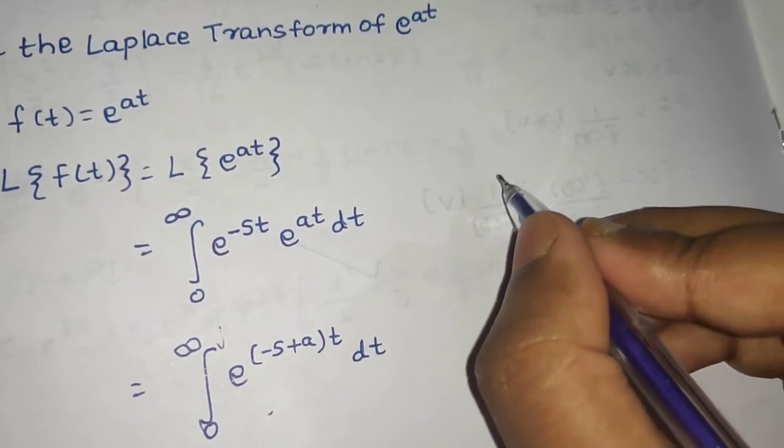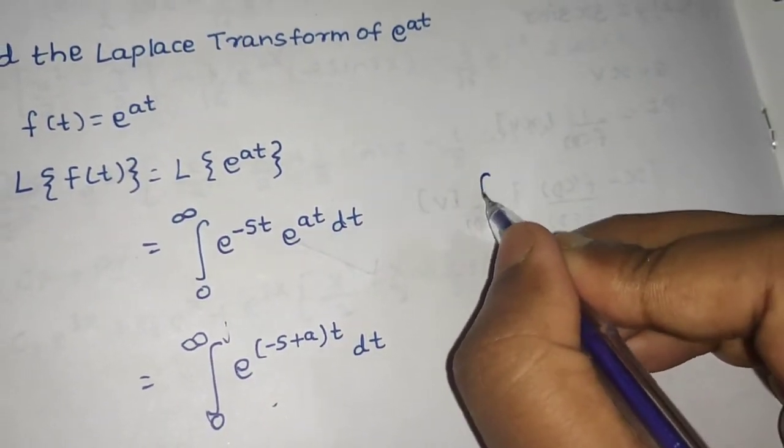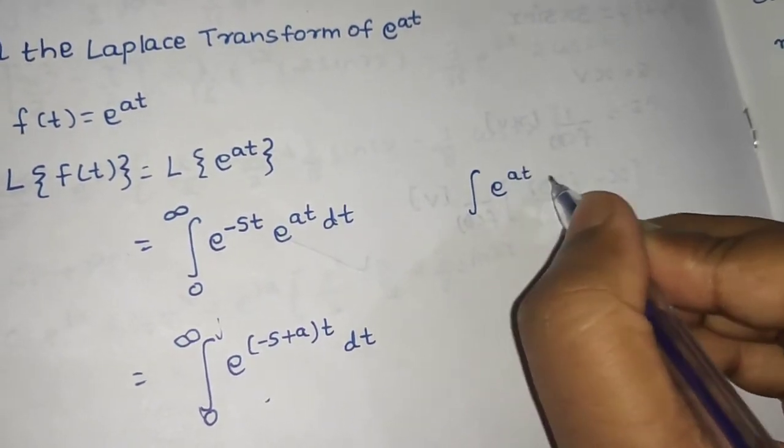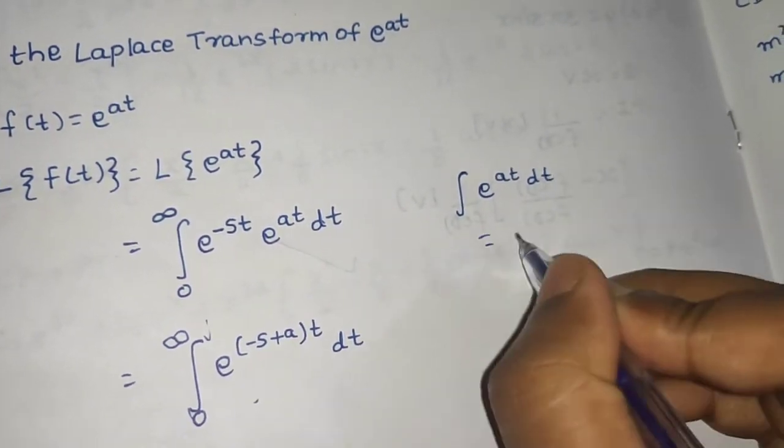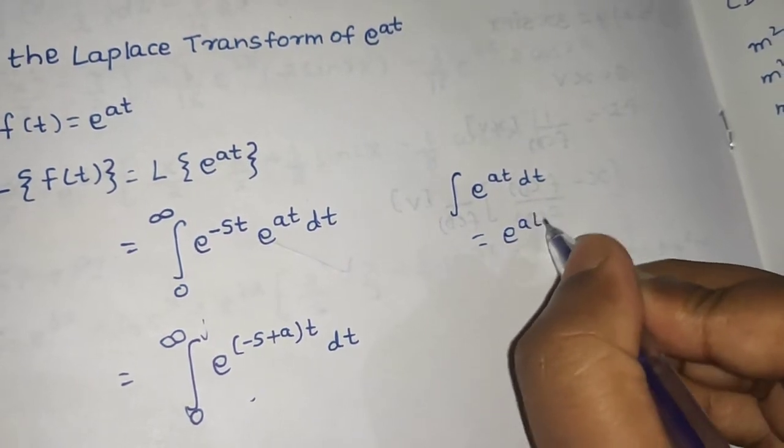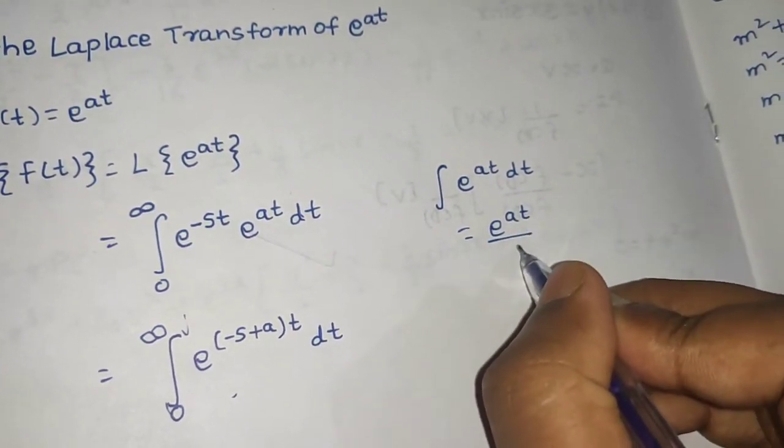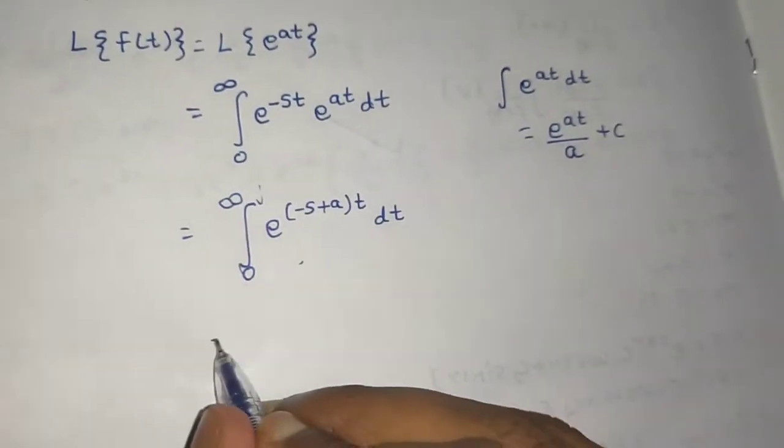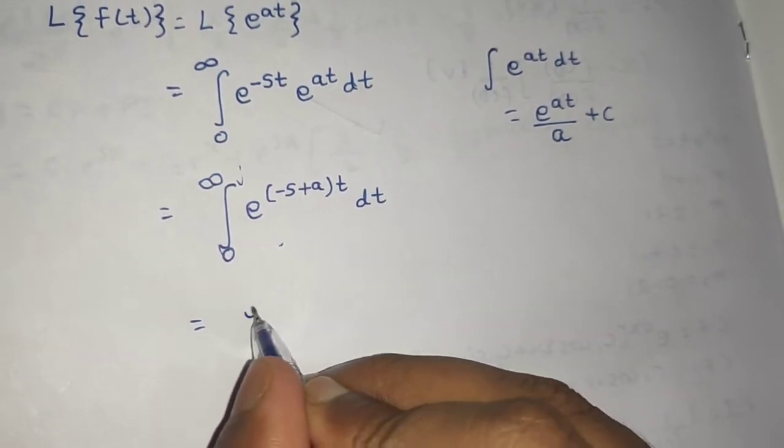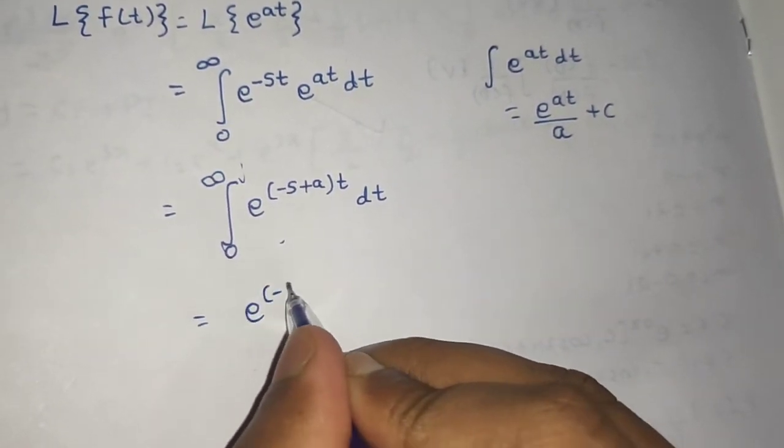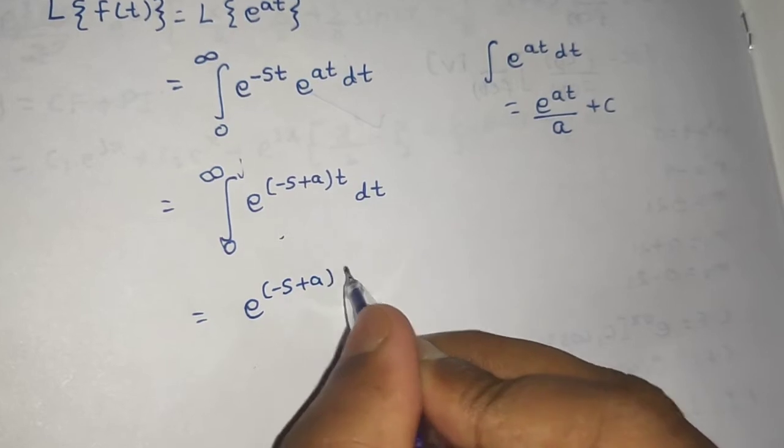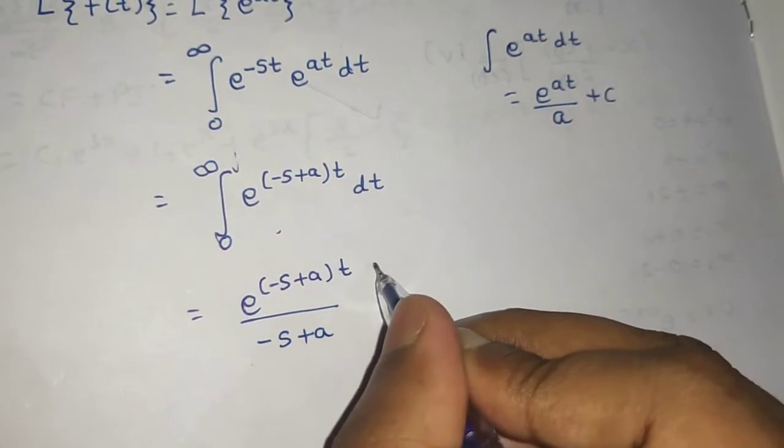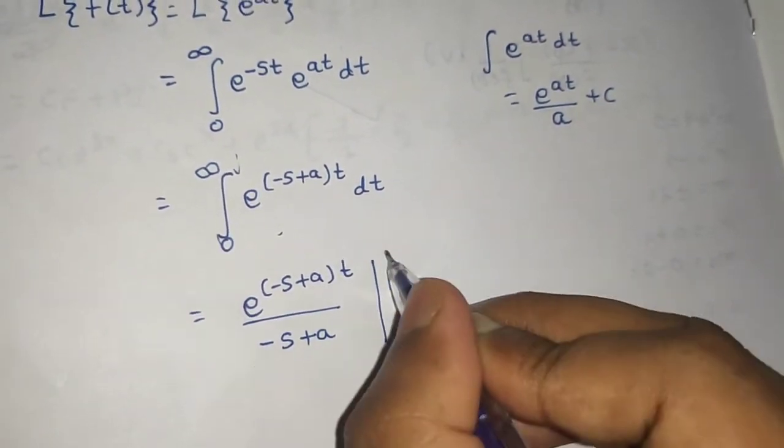Now, you know from your basic understanding that integral of e power at is nothing but e power at only divided by whatever is with t. So, same thing applies here. Its integration will be e power minus s plus a into t divided by minus s plus a and the limits are 0 and infinity.